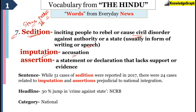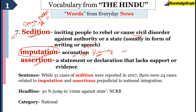The next word is imputation. Imputation means accusation — that means blaming. A good way to learn new words is to take your basic words and instead of using them, use the advanced word. For example, next time instead of using 'blaming' or 'accusation,' try using 'imputation.' The next word is assertion. Assertion is a statement or declaration that lacks support or evidence, but is said very confidently or forcefully. The combined sentence was: 'While 51 cases of sedition were reported in 2007, there were 24 cases related to imputation and assertions prejudicial to national integration.'